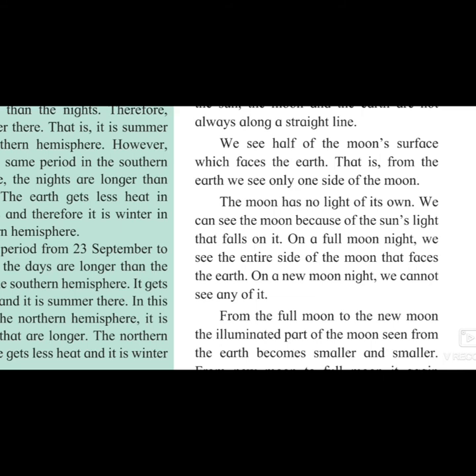Why can we see only one side of the moon? Because the earth's orbit and the moon's orbit intersect each other, we can only see the part of the moon which is facing near the earth. The moon has no light of its own — it is just a reflection of sunlight, and we see that light because of the sunlight which falls on it.